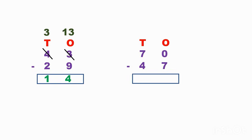When we cannot subtract, we have to borrow. My friend the tens place has seven tens — he will give me one ten. That means ten plus zero is ten. I will bring one ten to the ones place. Then how many tens are remaining? Six tens are remaining.